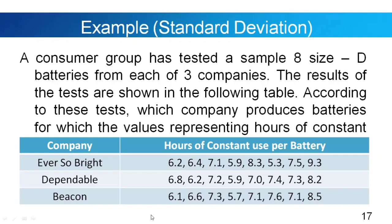We have three companies with eight battery samples each, measured in hours of constant use. Ever So Bright: 6.2, 6.4, 7.1, 5.9, 8.3, 5.3, 7.5, 9.3. Dependable Company: 6.8, 6.2, 7.2, 5.9, 7.0, 7.4, 7.3, 8.2. Beacon Company: 6.1, 6.6, 7.3, 5.7, 7.1, 7.6, 7.1, 8.5. We're going to solve the standard deviation of each company.